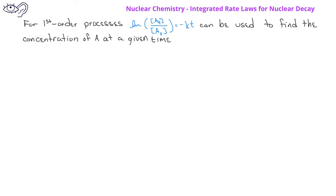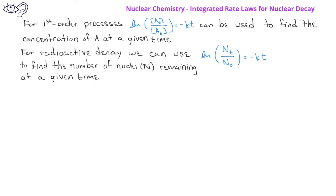We can use a similar equation for radioactive decay to calculate the number of nuclei remaining at a given time. This equation tells us that the natural log of the ratio of the number of nuclei at a given time to the nuclei originally is equal to negative kt, where k is the rate constant and t is the time.